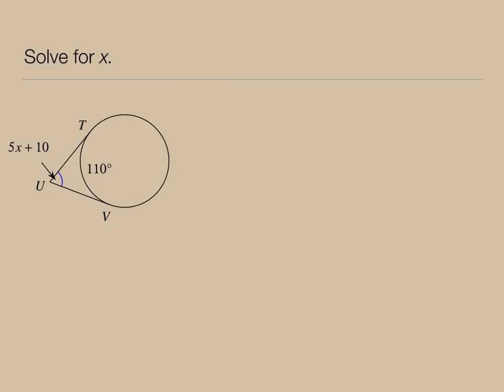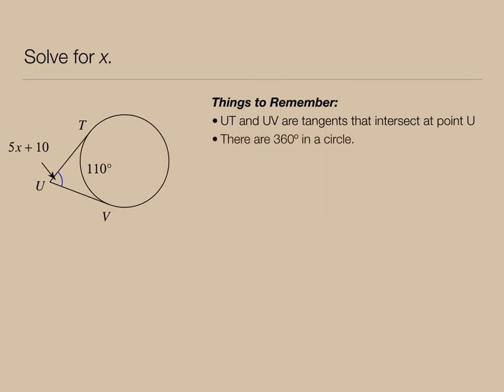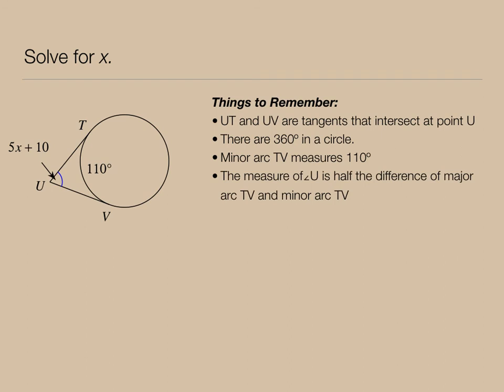But what if we're given algebraic expressions? Okay, so we want to remember here that UT and UV are tangents. They intersect at point U. There's 360 degrees in a circle. For example, the minor arc TV is given as 110 degrees. The measure of angle U is half the difference of the major arc and the minor arc.